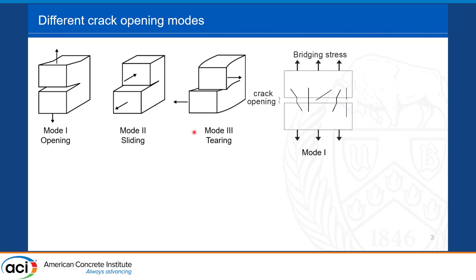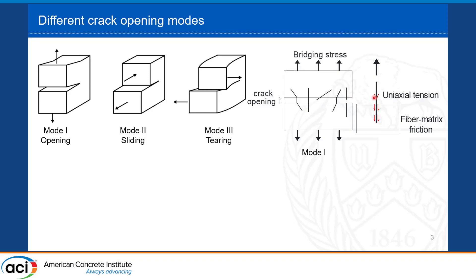The first mode is the most common, where we get cracking due to tension. When the crack opens in fiber-reinforced concrete or UHPC, the fibers bridge the crack, providing strengthening through tension of the fibers. The force is transferred as uniaxial tension in the fibers and then transferred to the matrix through friction or fiber-matrix bond.